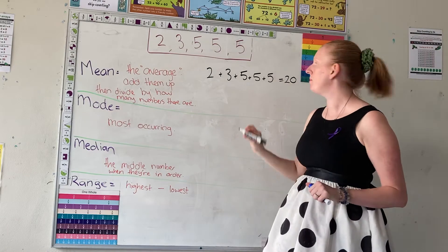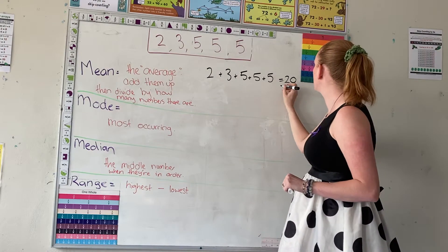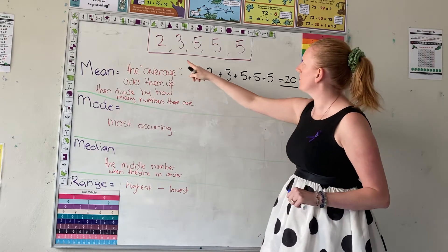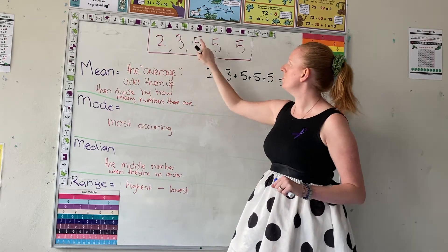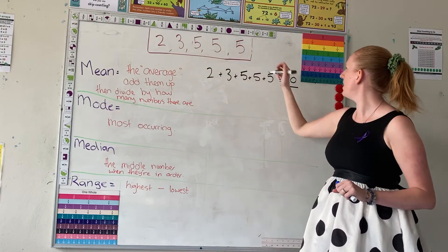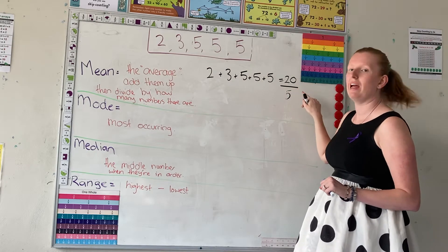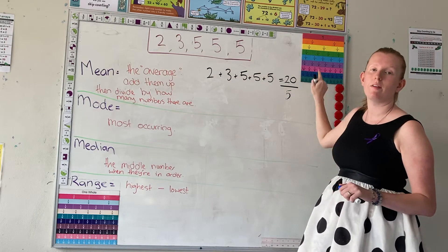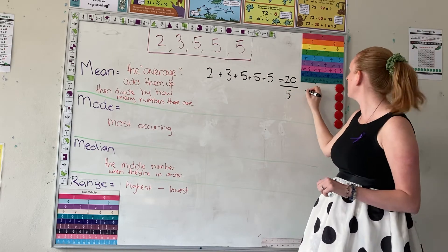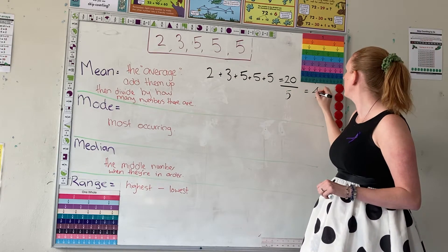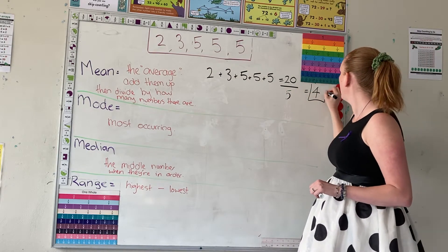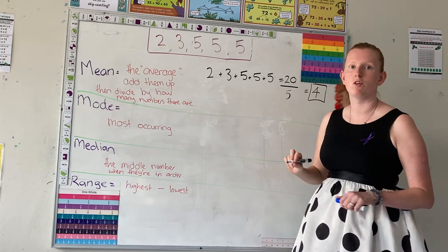Then we're going to divide by how many numbers there are. So there's one, two, three, four, five numbers. So how many times does five go into twenty? It goes in four times. So our mean is four.